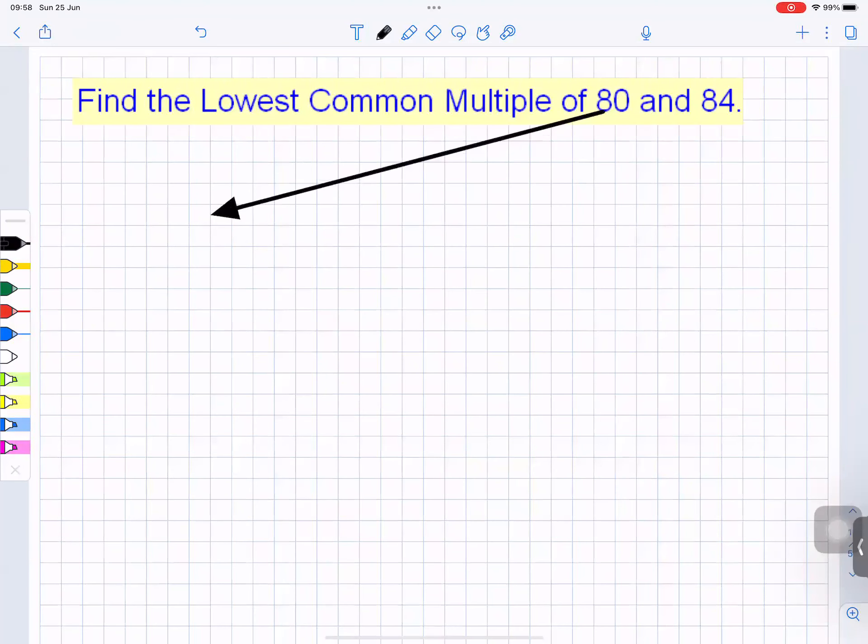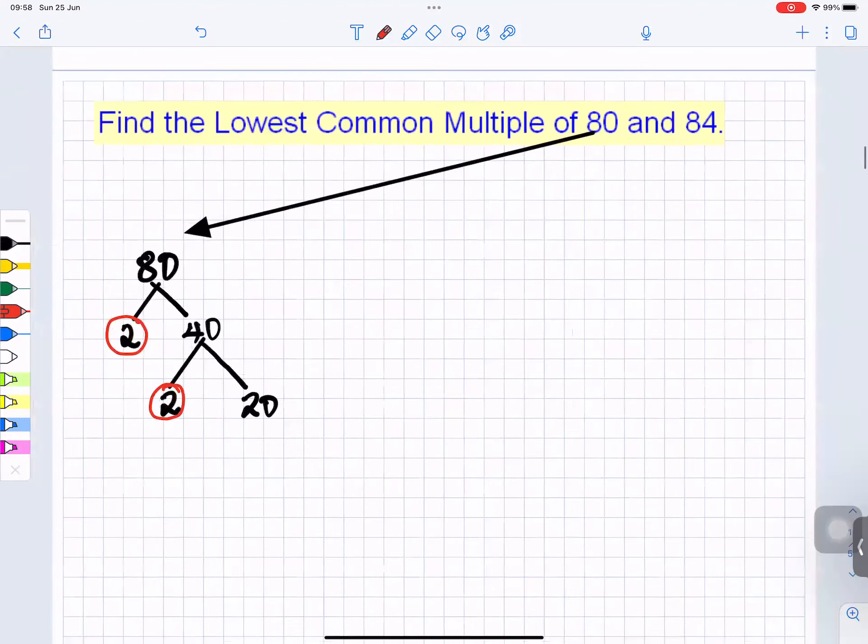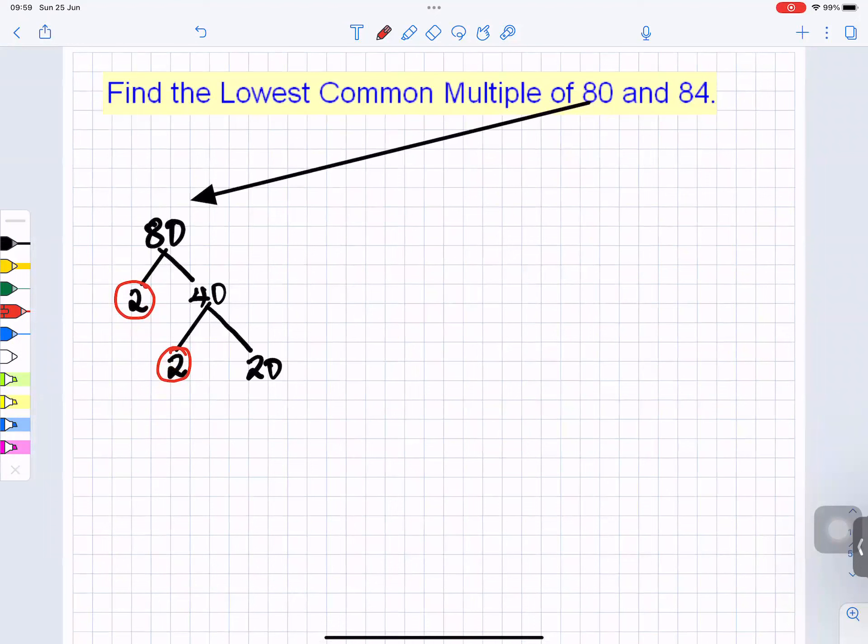I'll get the 80 first. If you have colors, use colors. 80 is an even number, so it'll be 2 times 40. I'll circle the 2 because 2 is a prime number. 40 is an even number—some people call it 40—and I'll put it 2 times 20, and I'll circle the 2 because it's a prime number.